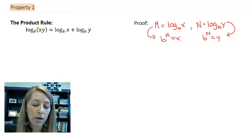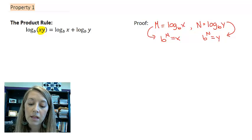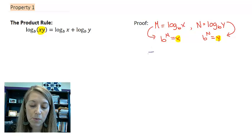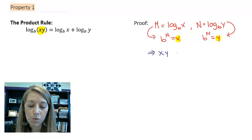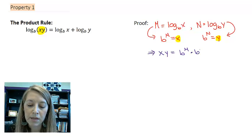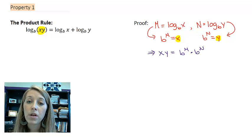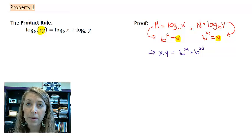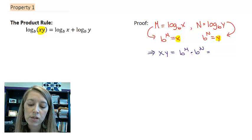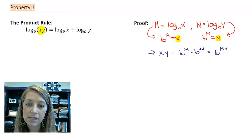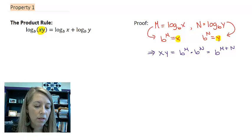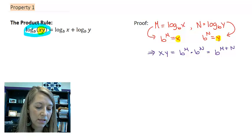Then, since I know I'm going to want to take x times y, let me do that here. I'm going to take x times y. So that tells me that x times y is b to the m times b to the n. But we know when we learned exponential properties way back when, we can actually simplify this since my bases match. That's b to the m plus n.